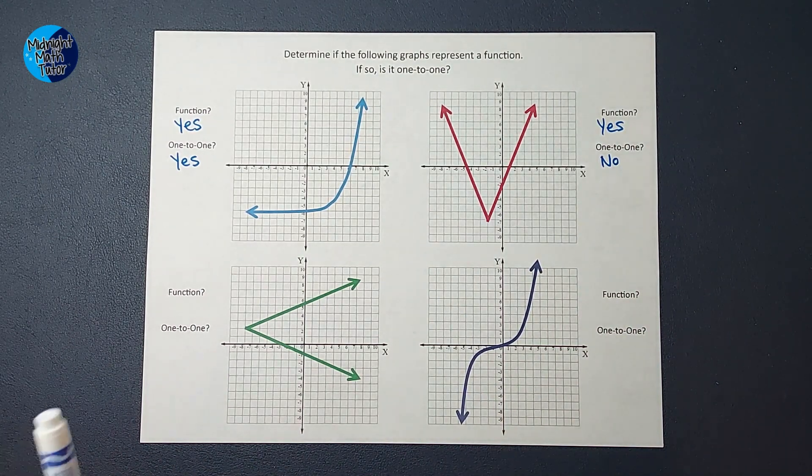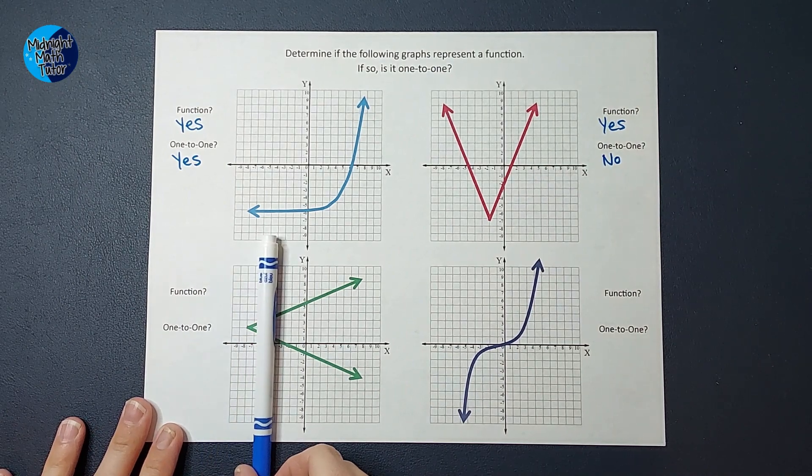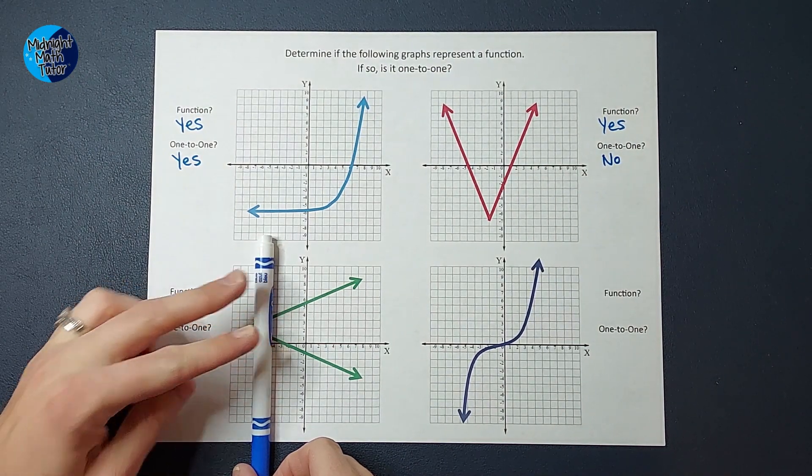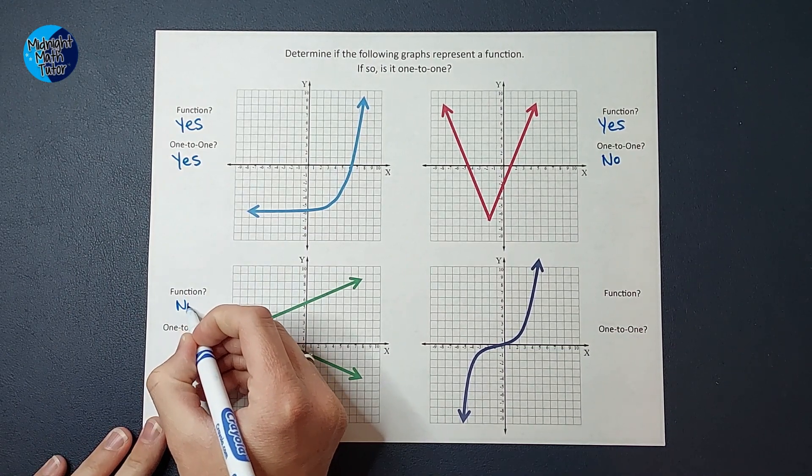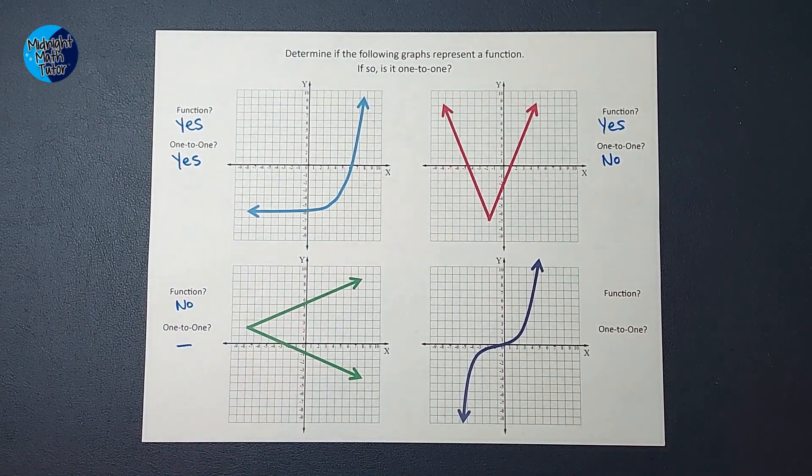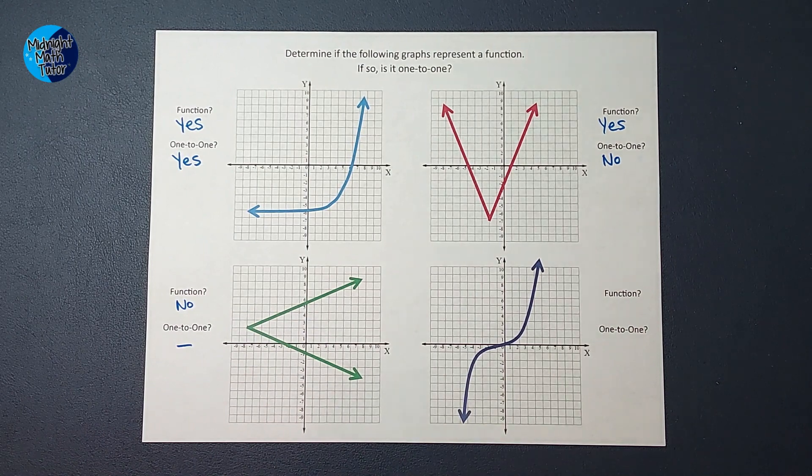Now let's look at this guy. Is this a function? We're going to do our vertical line test. You see right off, we hit two points, so no, it's not a function, and if it's not a function, we don't need to worry about if it's one-to-one or not, because it's not a function in the first place.